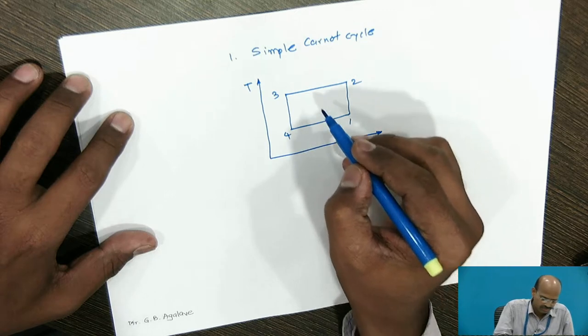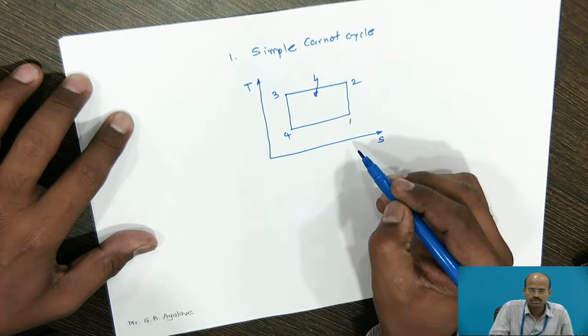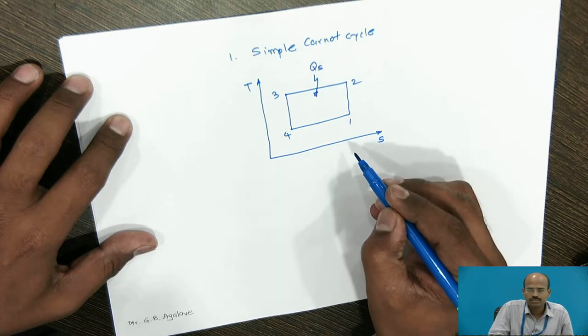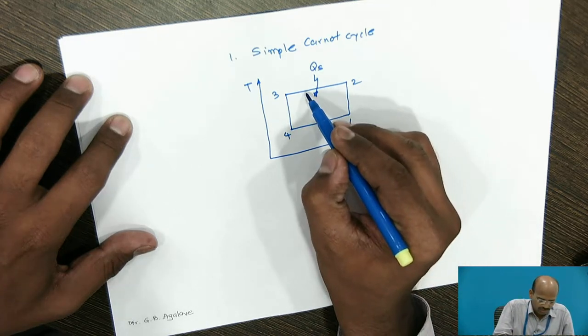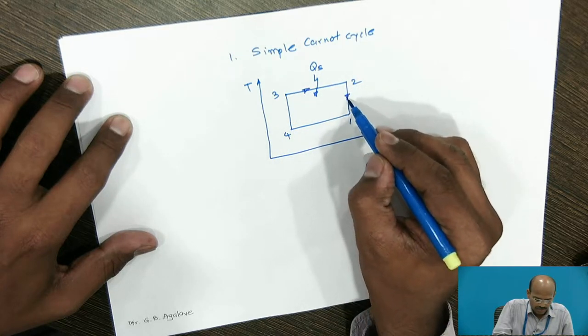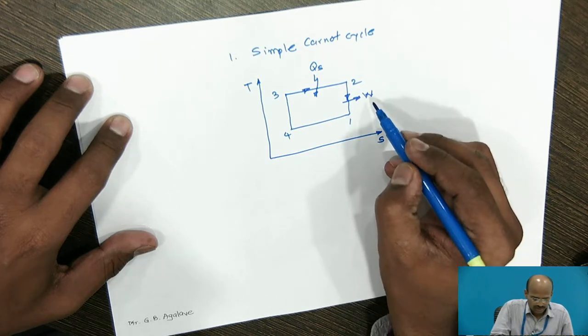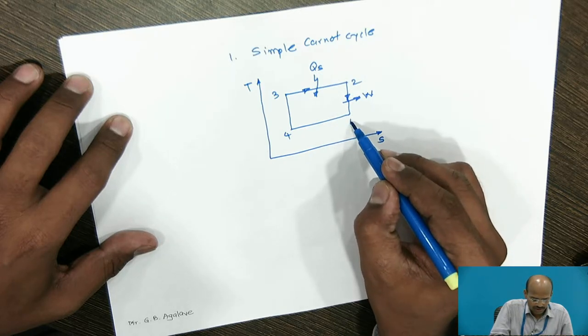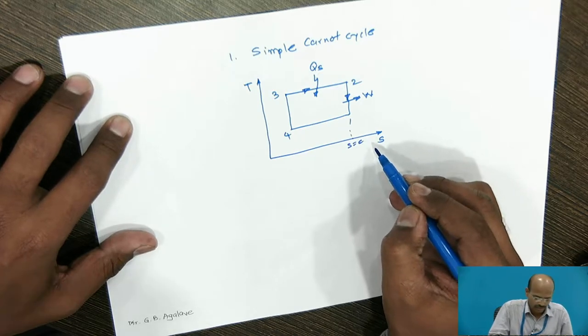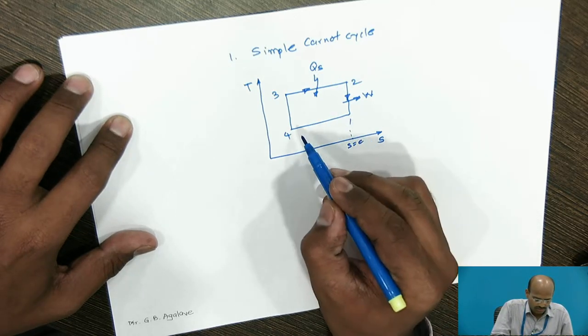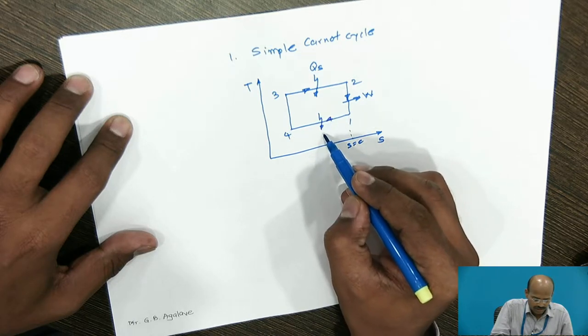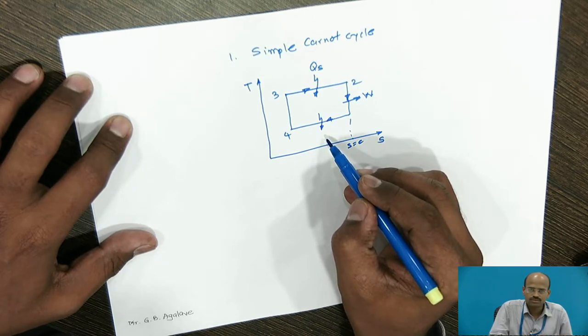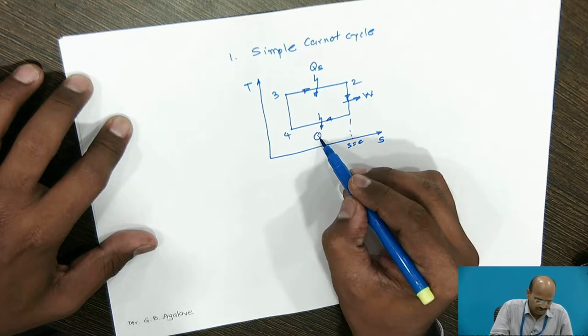In the Carnot cycle, we assume the hot body is brought in contact with the piston and cylinder arrangement. Then, the heat will be supplied to the piston and cylinder. Because of this heat supplied, we may get work. The work done by the engine or the Carnot cycle will be during process 2 to 3, which is isentropic process. So, this entropy is constant. During process 1 to 4, the heat will be rejected. To reject this heat from the piston cylinder, the cold body is required to be brought in contact with the cylinder head. This will be heat rejected.